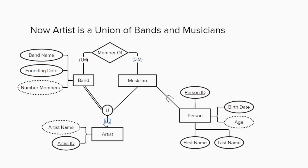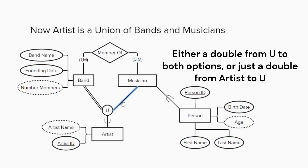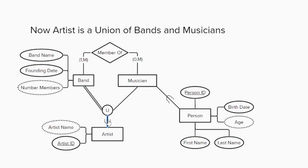This change results in some subtle differences to the model. Before, every musician was an artist, even if they didn't record songs as a solo musician. If we wanted to maintain that requirement, we could put a double line on the connection from the artist to the specialization circle. However, we are only using a single line here for musicians and bands, but a double line from artist to the circle. This means that it is possible for a musician to not be an artist, but we still want every band to be an artist, so the band has total participation.